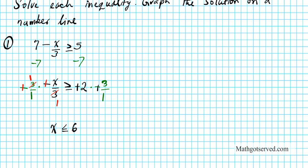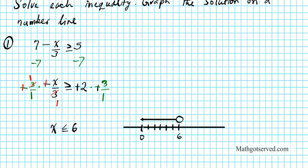Let's go ahead and graph that on the number line. x is less than or equal to 6. By graphing inequalities on a number line, just follow the direction of the inequality symbol — that's the easiest way. We have 0, 1, 2, 3, 4, 5, 6. We have a filled circle at 6 pointing to the left. The less than means it points to the left, and the line under the inequality indicates that 6 is also part of the solution set, so we fill in the circle. There goes the solution graph.